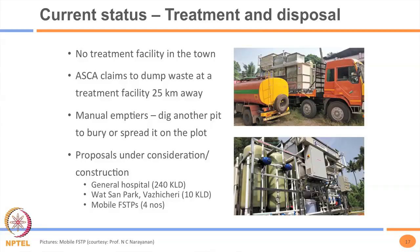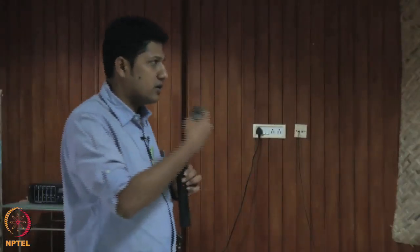A mobile FSTP is mounted on a truck and uses electro-pyrolysis technology. The owner claims it can treat about 50,000 liters of fecal sludge in 20 hours, meaning about 10 truck loads per 24-hour cycle. This photo was taken just yesterday and we will look to learn more about it.